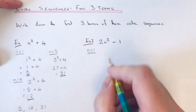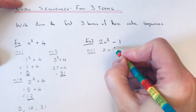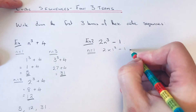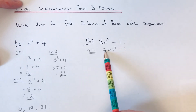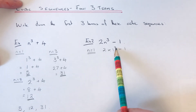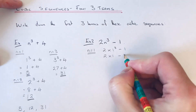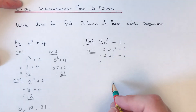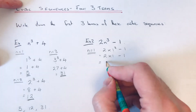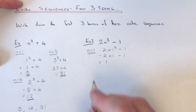To get our first term we substitute n equals 1, so it'll be 2 times 1 cubed, take away 1. We need to do the cubing bit first. 1 cubed is 1 times 1 times 1, which is 1. So it's 2 times 1, take away 1 — 2 times 1 is 2, take away 1 gives an answer of 1.